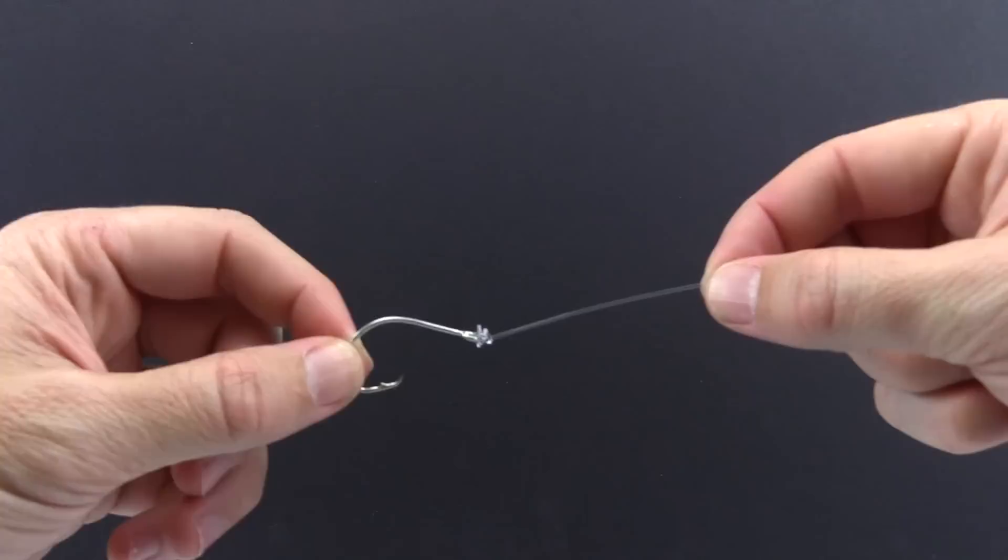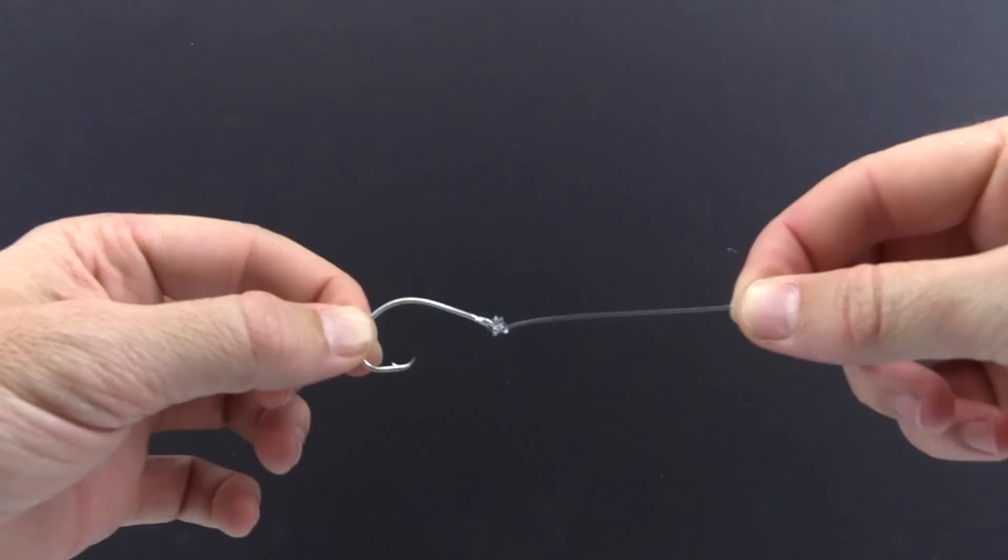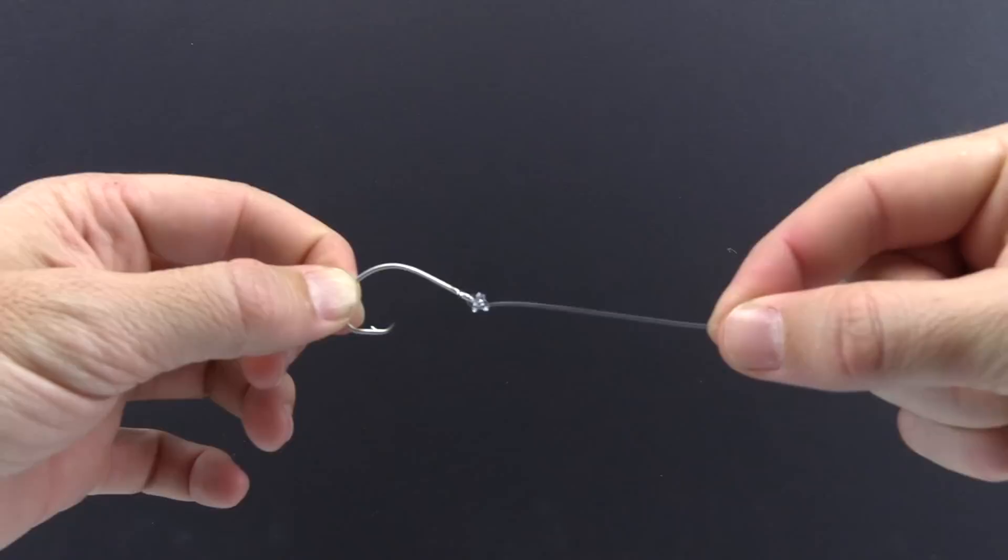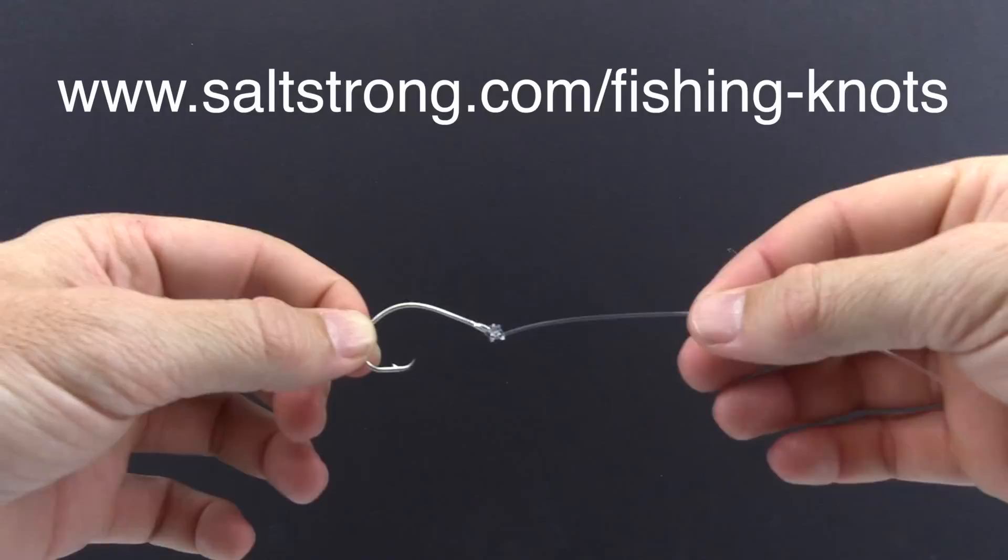As you can see, an easy knot. This is a small knot, this is a 60 pound line which is bigger than I typically use but it looks better on the camera. So a really small knot, quick and easy to tie. To see exactly how it performs as far as strength, you can go to our website where we have a listing of all the top knots and how it ranks based on strength at saltstrong.com/fishing-knots. There'll be a link down below.